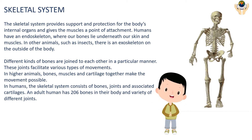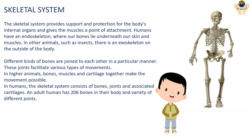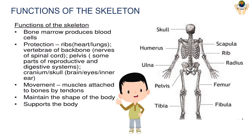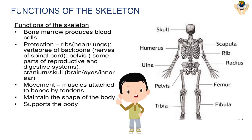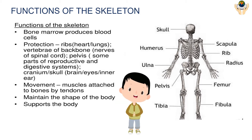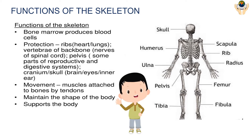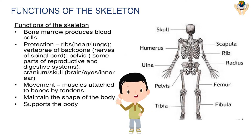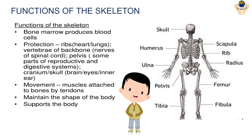An adult human has 206 bones in their body and a variety of different joints. Functions of the skeleton include: bone marrow produces blood cells; protection of the ribs around the heart and lungs; the vertebral backbone protects the nerves of the spinal cord; the pelvis protects some parts of the reproductive and digestive system; and the cranium or skull protects the brain, eyes, and inner ear.